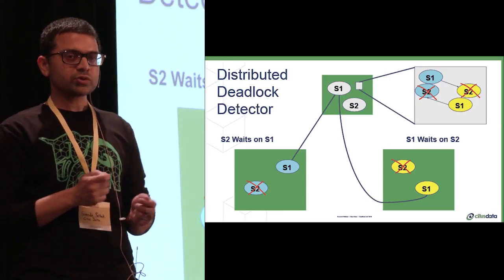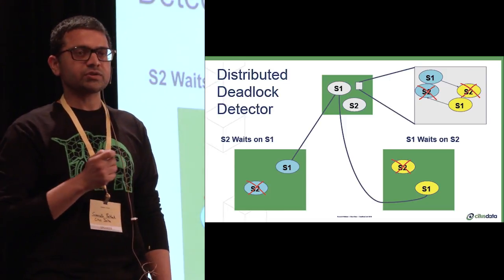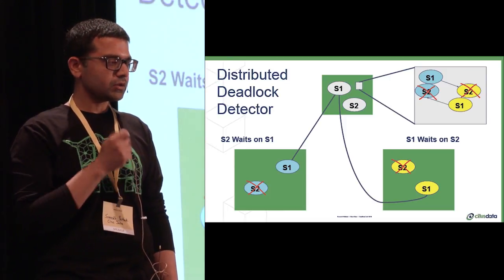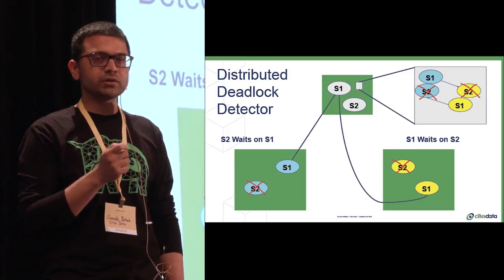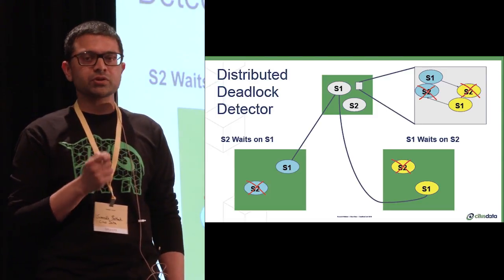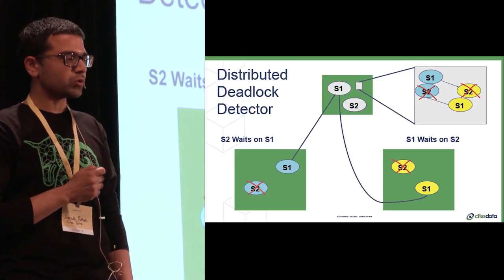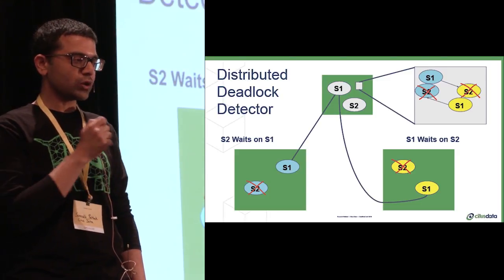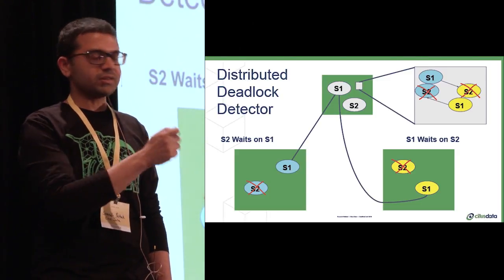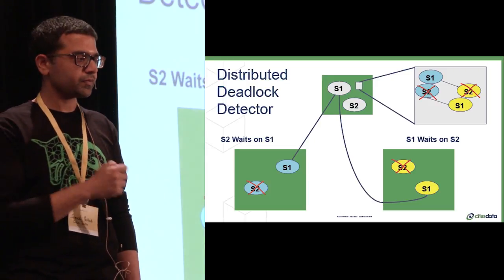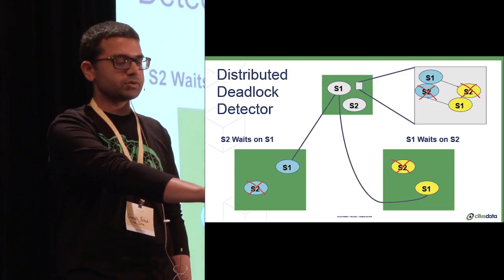You need a distributed deadlock detector. We need to associate each session with a globally unique transaction identifier. The global deadlock detector then dumps these wait graphs from each node and constructs a global lock wait graph on the coordinator. We can now look for cycles in this graph. And in this case, we decided to kill session two so that session one can make progress.